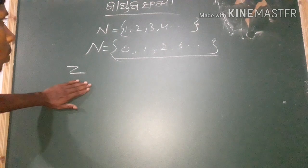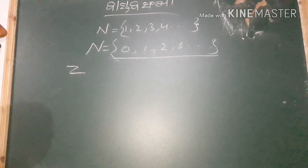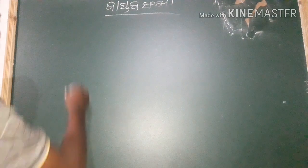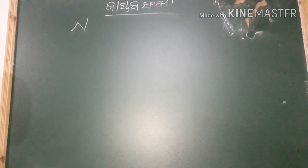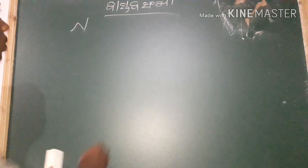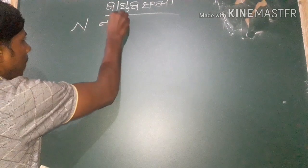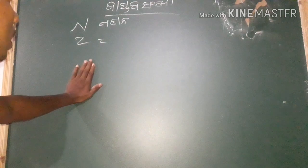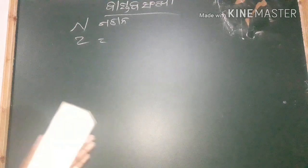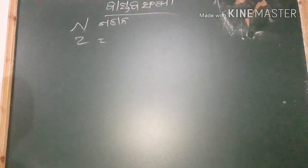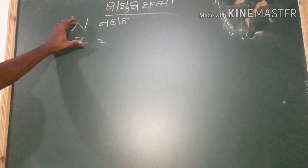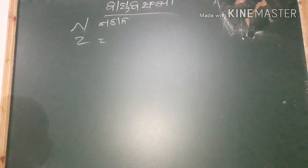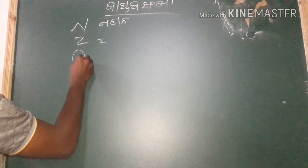So we have Z. Here we have N set, then Z, then we have N set. So if we have N set, then we have Z, so we have Q set.